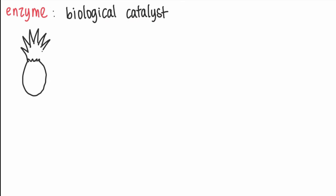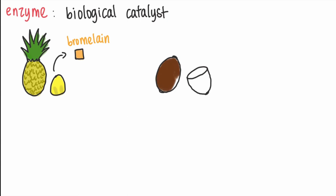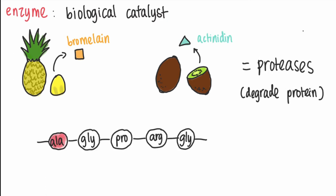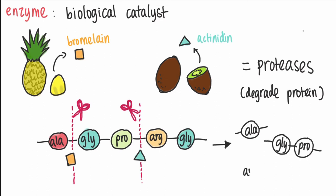The reason we are using pineapple and kiwi is because they contain specific enzymes. Enzymes are protein molecules that help to speed up a reaction. They are so-called biological catalysts. Pineapple contains the enzyme bromelain and kiwi contains the enzyme actinidine. Both of these are proteases, which work by breaking the protein apart by cutting the amino acid chains.